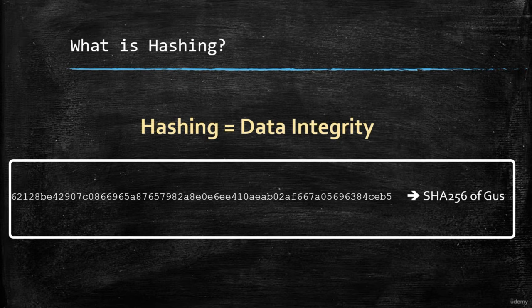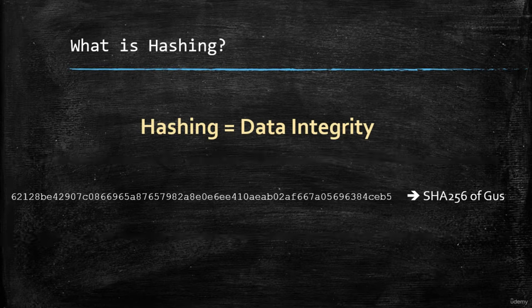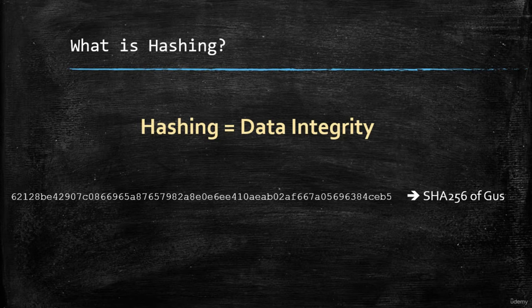Let me show you an example of hash output for the text value 'gus'. We will dive deep into output formats. When we say cracking a hash, it means converting these hexadecimal numbers back into the original clear text format, which is 'gus' in this case.